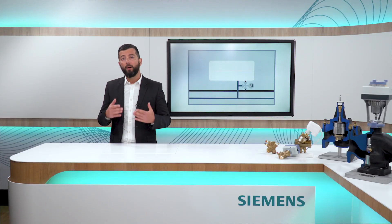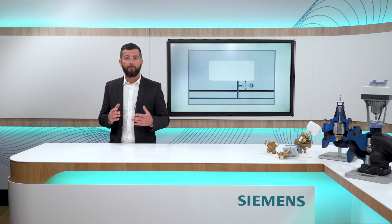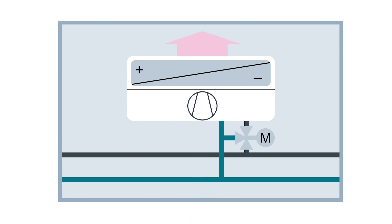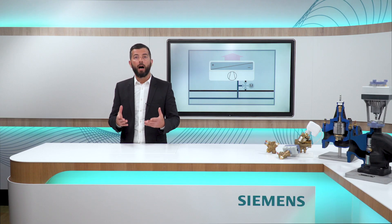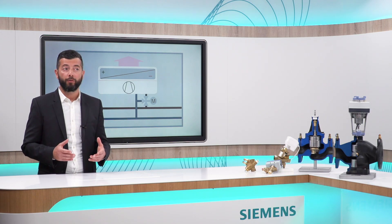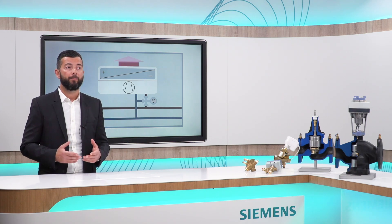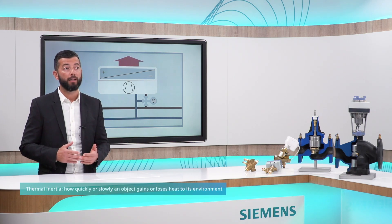Let's start with what is a Fan Coil Unit? A Fan Coil Unit basically consists of a heat exchanger and a fan. It transports the heating or cooling energy from the hydraulic network with temperature-controlled air into the room. Fan Coils are particularly well suited for room applications. If someone changes the room temperature setting, the Fan Coil reacts very quickly thanks to a relatively low thermal inertia.